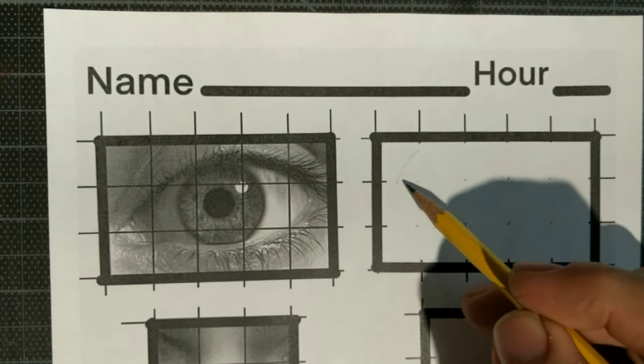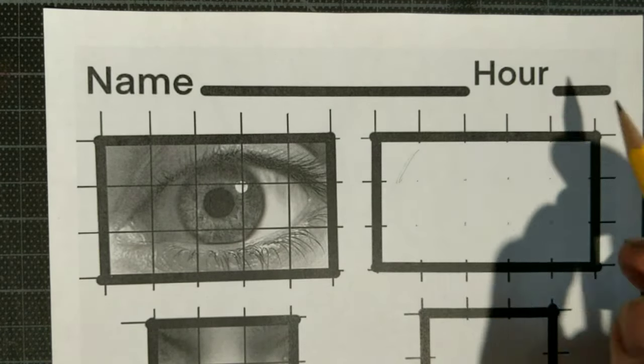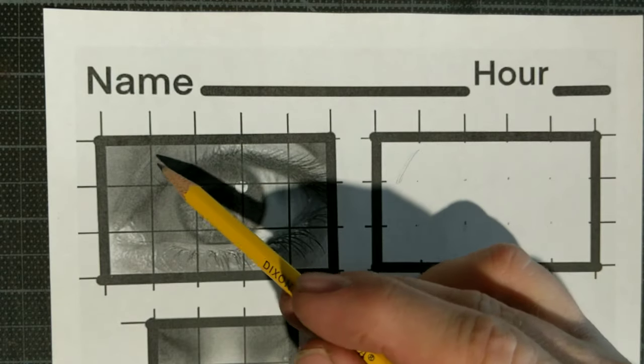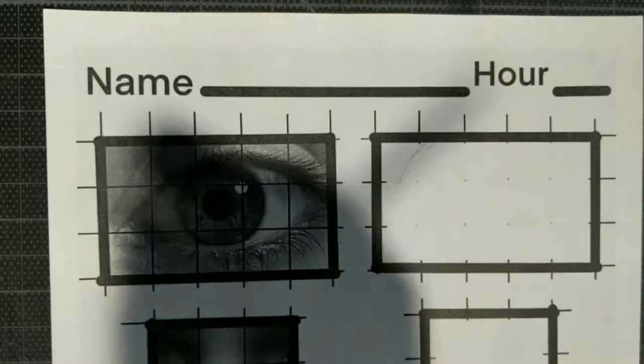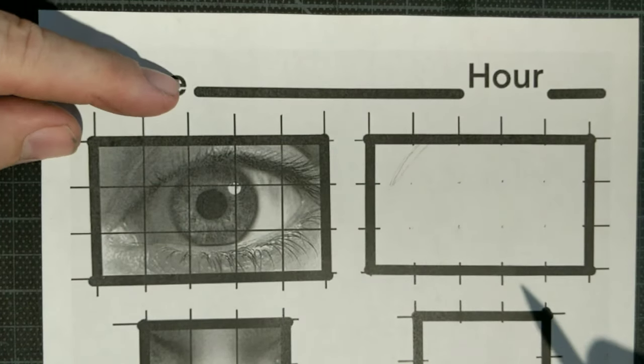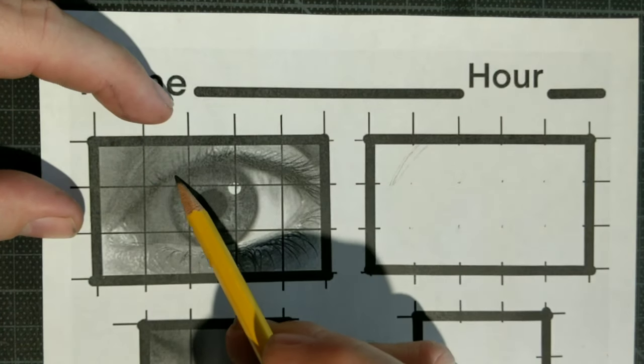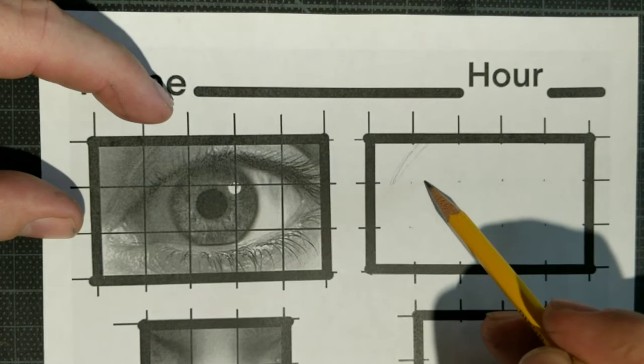So I put some dots in the corners of where each line would cross at each intersection just so I could lay out the drawing of the eye, just a light drawing of the eye before I got started.